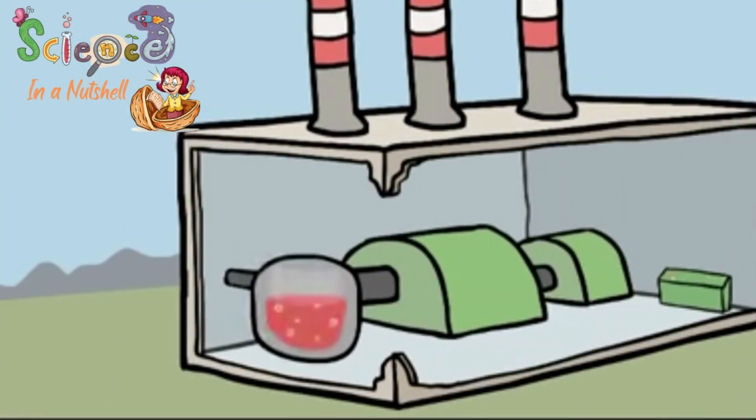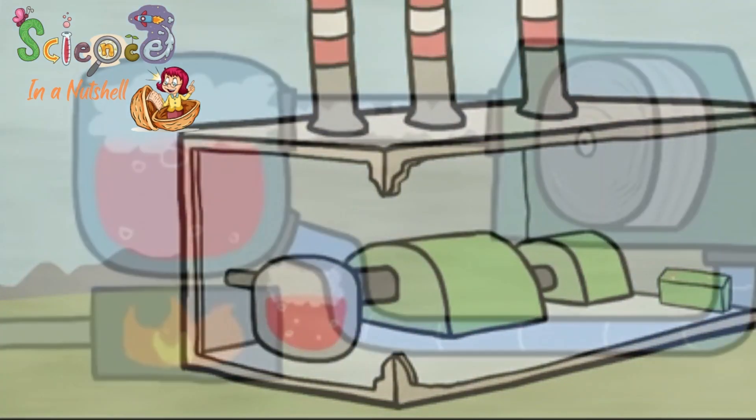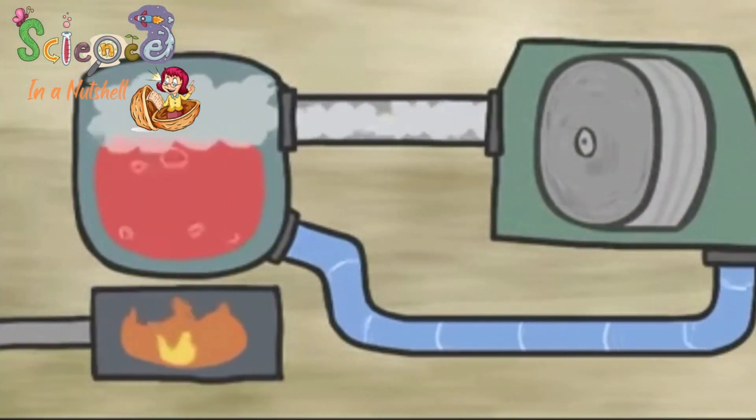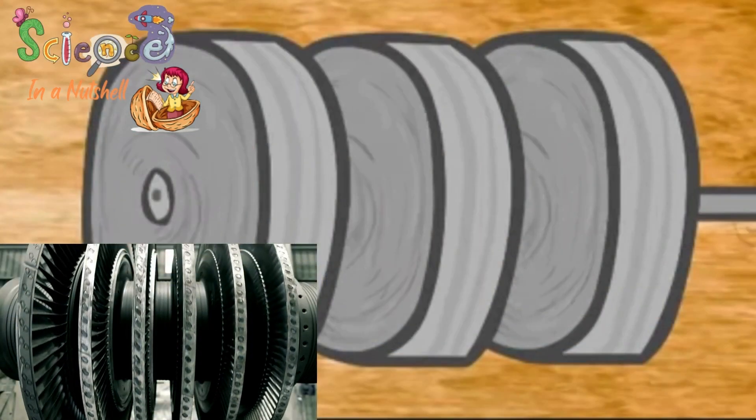To generate electricity, fossil fuel is burned at the electric power stations, power plants. When fuel burns, it produces thermal energy. This thermal energy is used to heat water and then producing steam. The steam goes inside tubes to be used to operate devices called turbines.